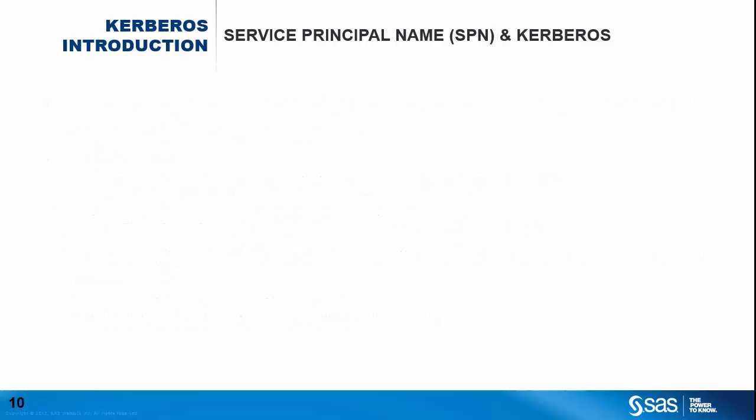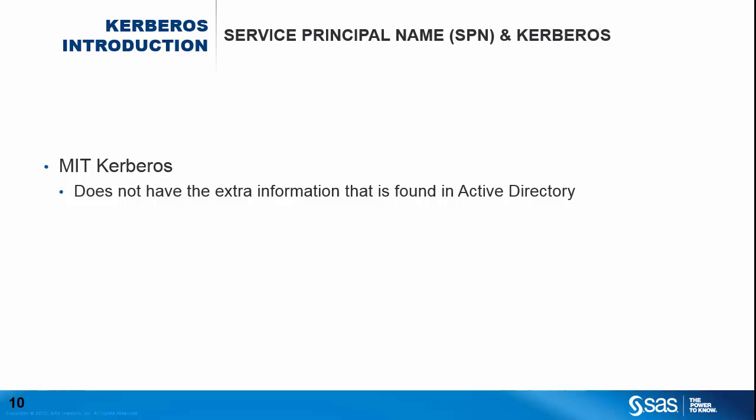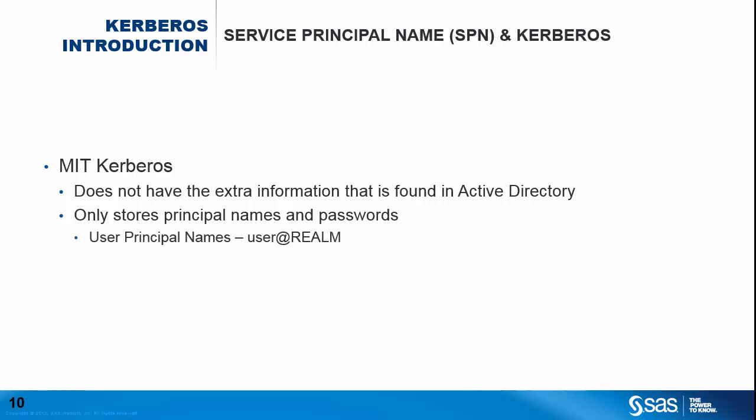What we've just discussed holds true for Windows and Active Directory. With MIT Kerberos, things are slightly different. A lot of the extra information found in Active Directory is not present in MIT Kerberos — in MIT Kerberos, it's just about authentication, whilst Active Directory is a full LDAP server and more. MIT Kerberos only stores the principal names and passwords; nothing else is stored in the MIT Kerberos database. For user principal names, they have the form user at realm, whilst for service principal names, they have the form service class slash host at realm.